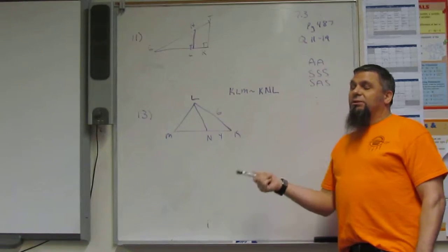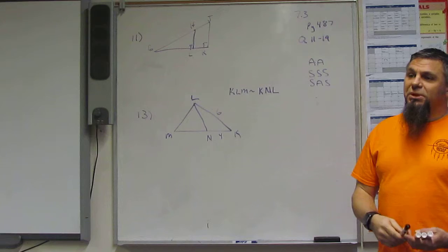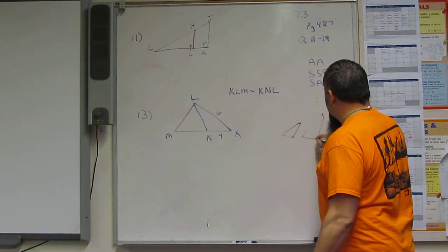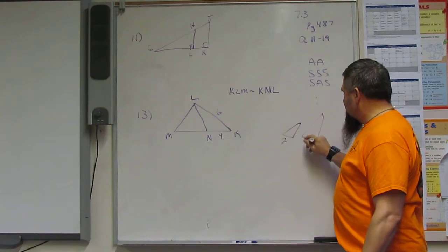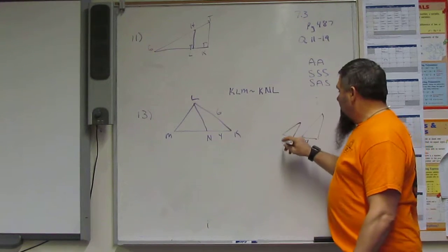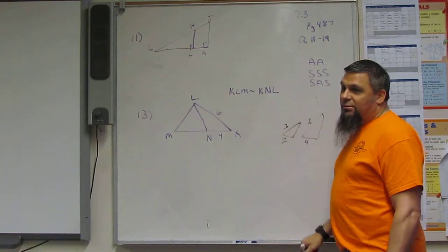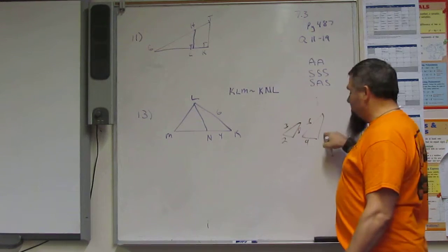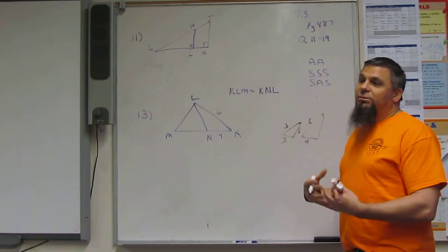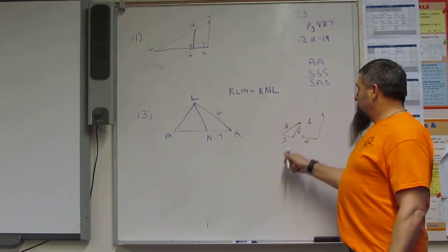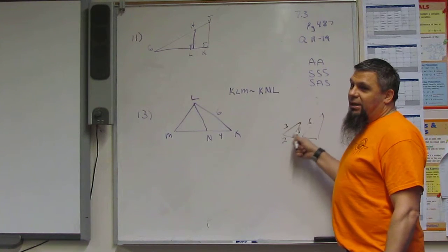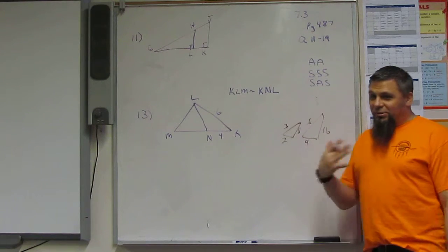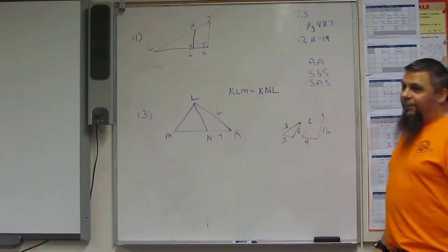And then there's Side-Side-Side. If all three sides are proportional, then the triangles are similar. Proportional meaning if I take this triangle and this triangle, and this side is two and this side is four, this side is three and this side is six, and this side is eight, this side would be, if it were proportional, it would be two, four, three, six, eight... sixteen. Multiply by two, right? Proportional - they're all multiplied by the same number.